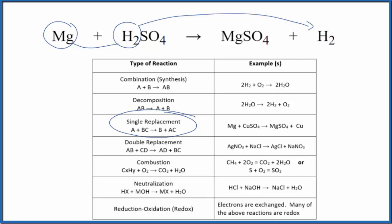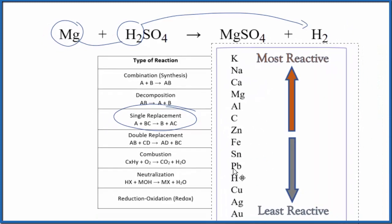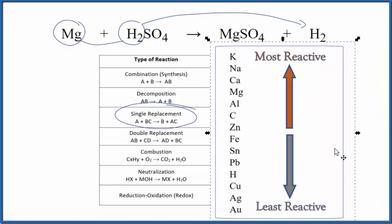With single displacement reactions, it's a good idea to check and see if the reaction actually takes place. And we can do that with the activity series here in this table. So we're going to look for magnesium, which is right here, and then hydrogen, which is right here.